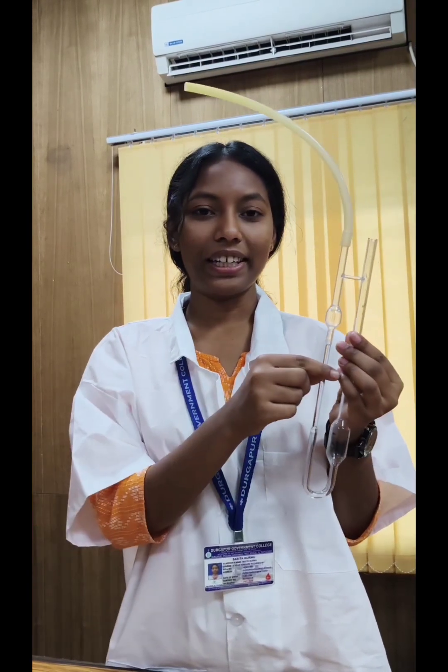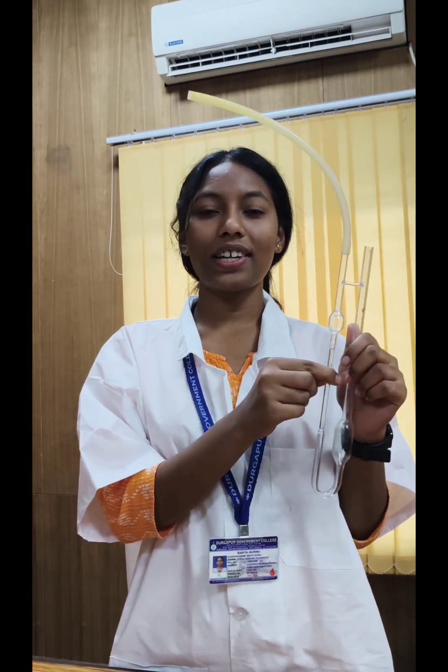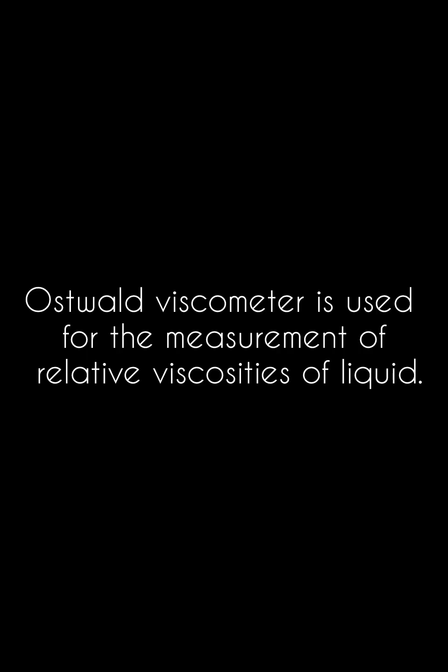This is an Ostwald Viscometer. It is the simplest as well as a useful instrument. The Ostwald Viscometer is used for the measurement of relative viscosities of liquids.